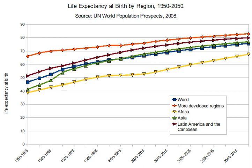In populations with high infant mortality rates, LEB is highly sensitive to the rate of death in the first few years of life. Because of this sensitivity to infant mortality, LEB can be subjected to gross misinterpretation, leading one to believe that a population with a low LEB will necessarily have a small proportion of older people. For example, in a hypothetical stationary population in which half the population dies before the age of 5 but everybody else dies at exactly 70 years old, LEB will be about 36, but about 25% of the population will be between the ages of 50 and 70.